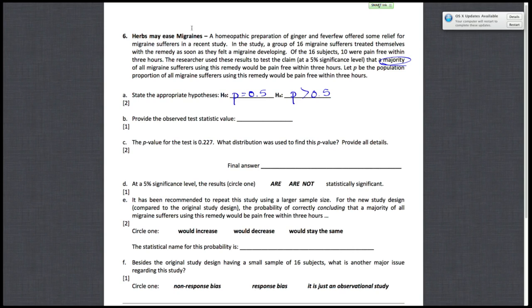So there are 16 subjects total, and to check if you can use the large sample z-test, you want the number of yeses and noes to be both at or above 10. So 10 were pain-free, which is greater than or equal to 10, that's fine. However, 6 is not greater than or equal to 10, so that doesn't work. So since we can't use a large sample z-test, we have to use a small sample binomial test.